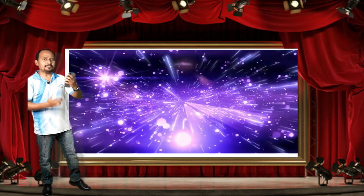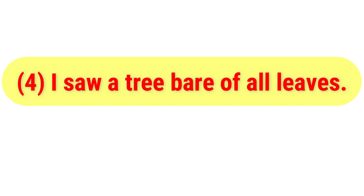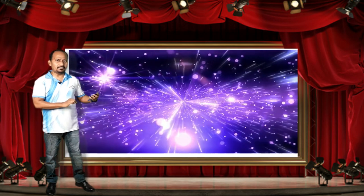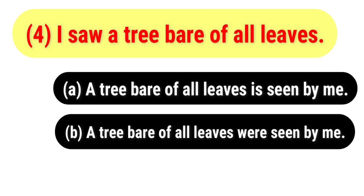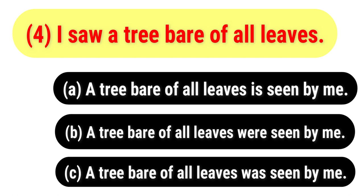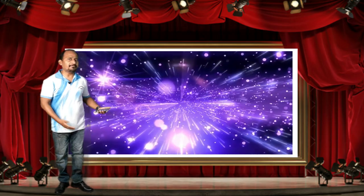The fourth question is in active voice: 'I saw a tree bare of all leaves.' You have to change it to passive voice. The options are: A) A tree bare of all leaves is seen by me; B) A tree bare of all leaves were seen by me; C) A tree bare of all leaves was seen by me; D) A tree bare of all leaves was saw by me. Your time begins now.